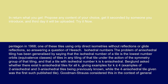The problem of anisohedral tiling has been generalized by saying that the isohedral number of a tile is the lowest number of orbits, or equivalence classes, of tiles in any tiling of that tile under the action of the symmetry group of that tiling, and that a tile with isohedral number k is k-anisohedral. Berglund asked whether there exist k-anisohedral tiles for all k, giving examples for k less than or equal to four, with examples of 2-anisohedral and 3-anisohedral tiles being previously known, while the 4-anisohedral tile given was the first such published tile.